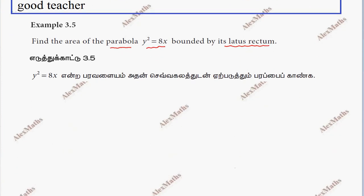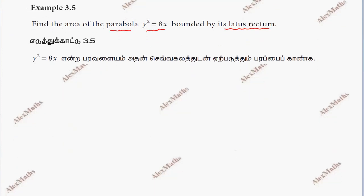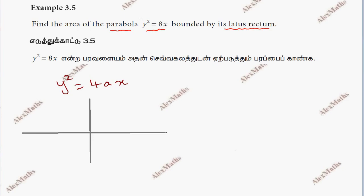The parabola equation is y² = 8x. The general equation is y² = 4ax. Looking at the diagram with the x-axis and y-axis, the parabola y² = 8x is right-side open, with vertex at the origin. The focus is at (1, 0). The latus rectum is a perpendicular line through the focus, perpendicular to the x-axis.